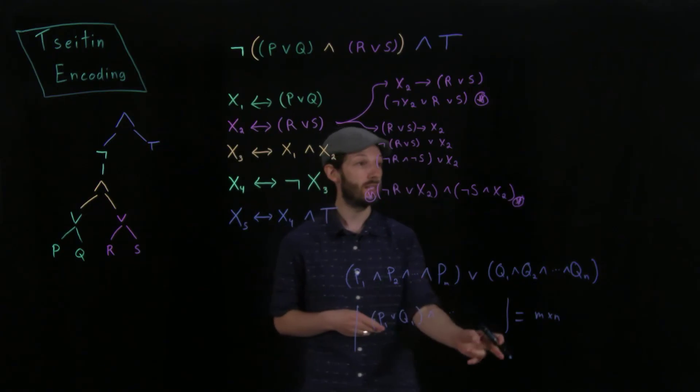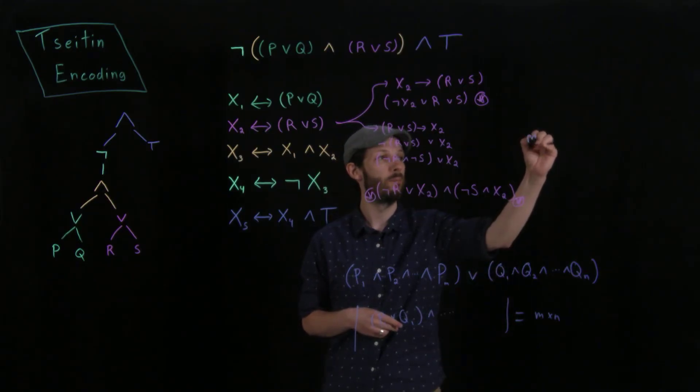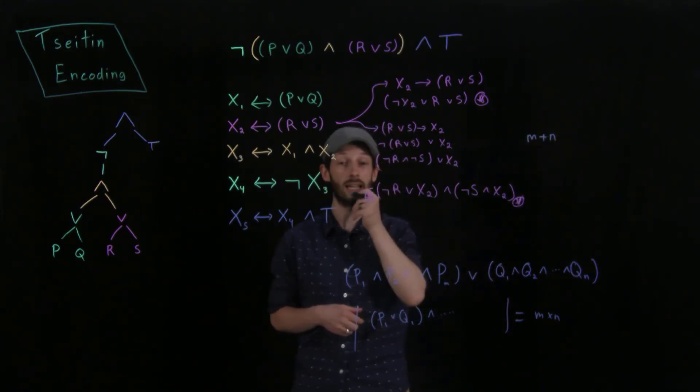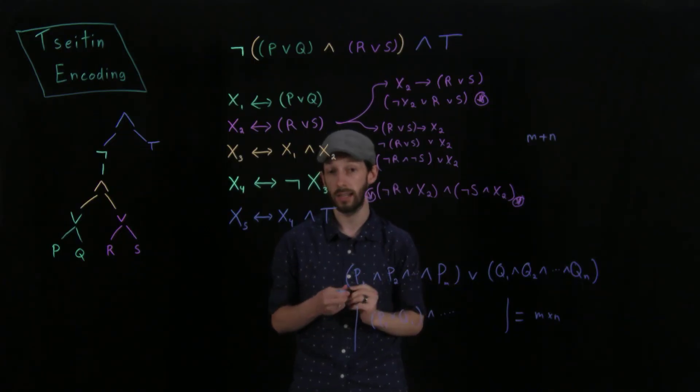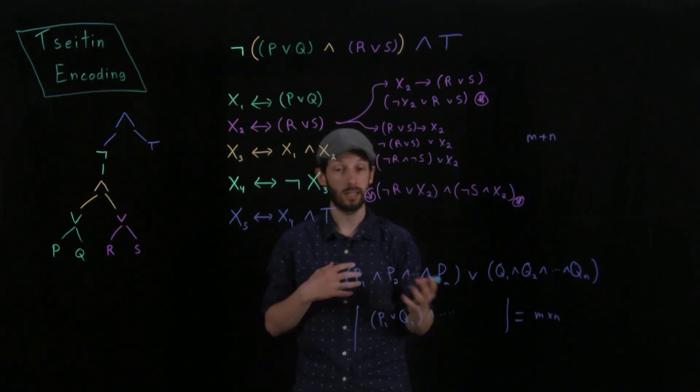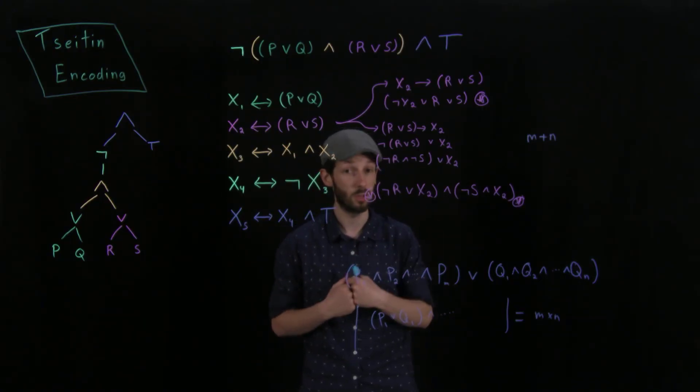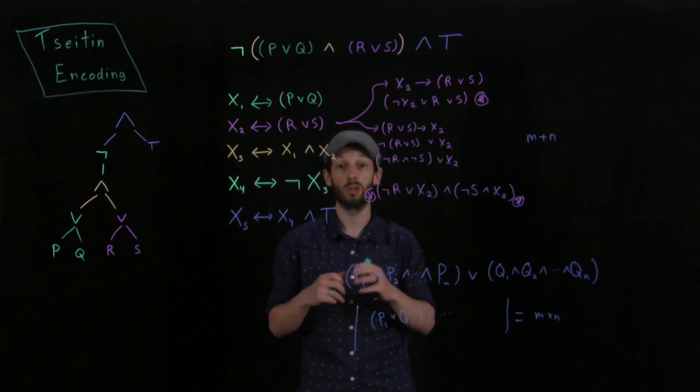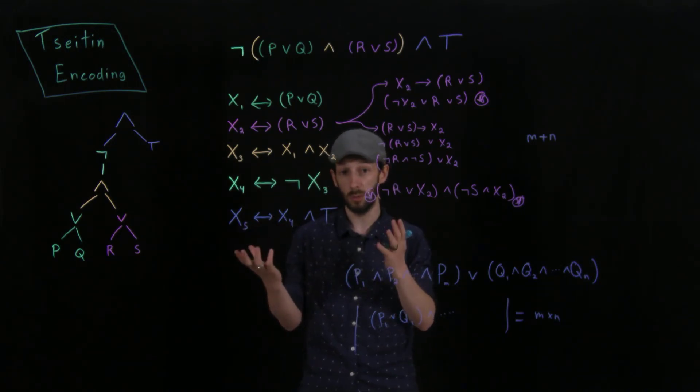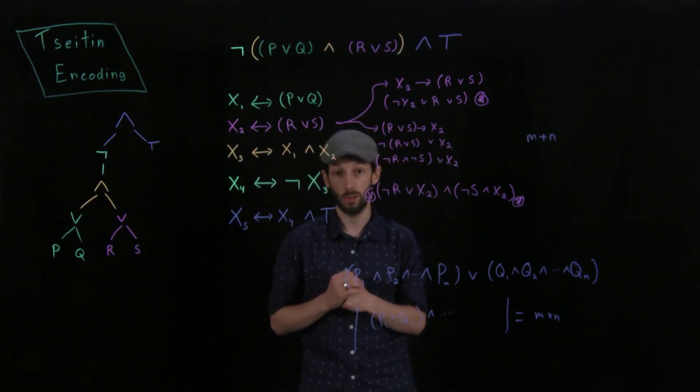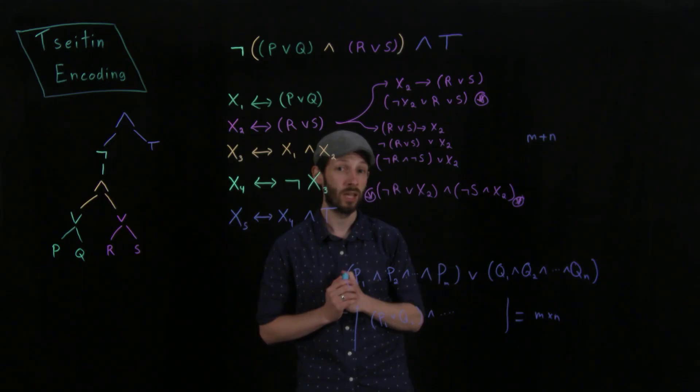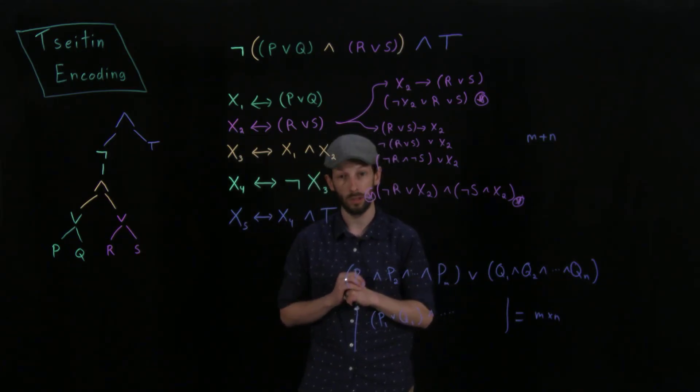Now, if we're using the Tseitin encoding instead, it's not m times n, it's m plus n. So it's linear in the size of the formula that you begin with, and this is why it's widely employed when we're trying to test whether or not a formula is satisfiable or not, and you'll see in some of the project work that you might do that this is actually used quite extensively in order to encode arbitrary propositional formulas into a form that we can actually start to answer these questions with without experiencing this m times n blow up. So there you have it. This is the Tseitin encoding. It will appear likely on one of the quizzes for you to do, both the naive approach of converting to conjunctive normal form, but as well as converting using the Tseitin encoding in this more compact way.